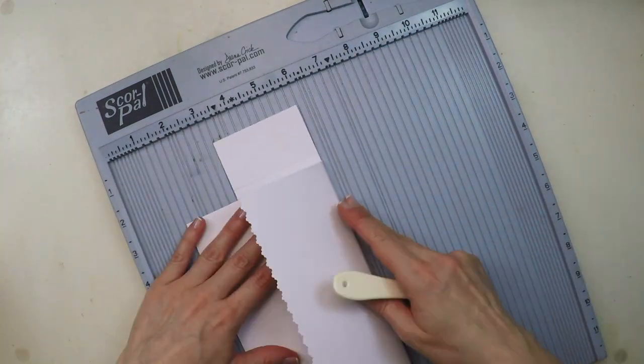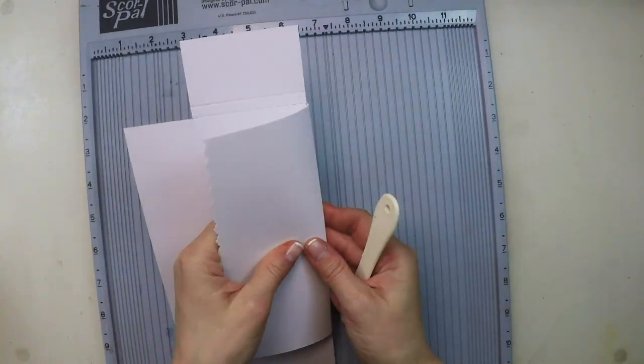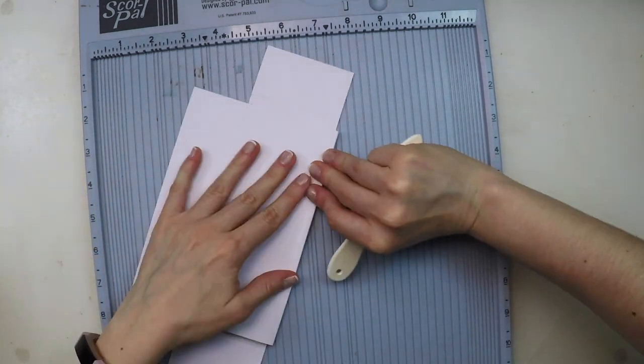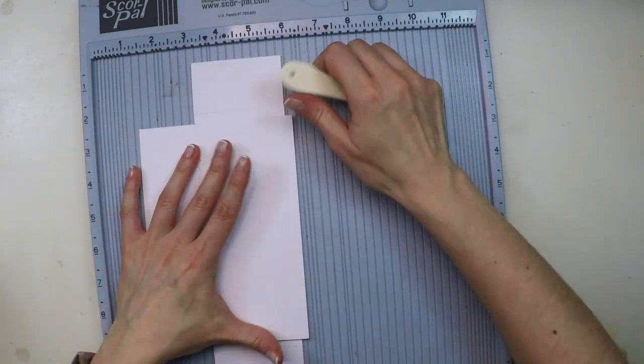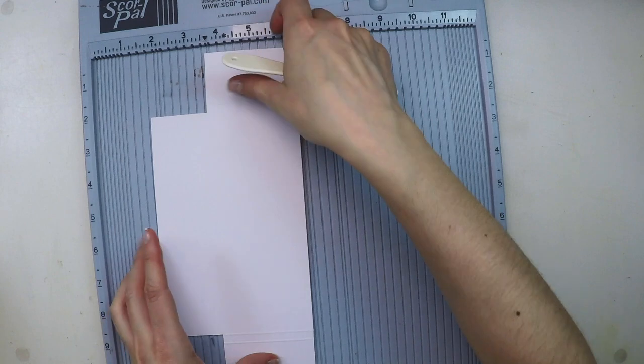Then when you start folding it's a matter of pressing down with a lot of strength with the bone folder to make sure that the score lines are very marked.